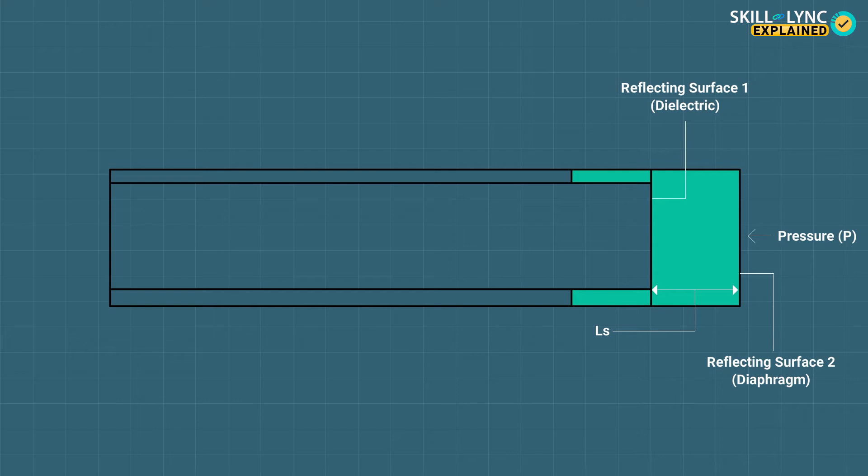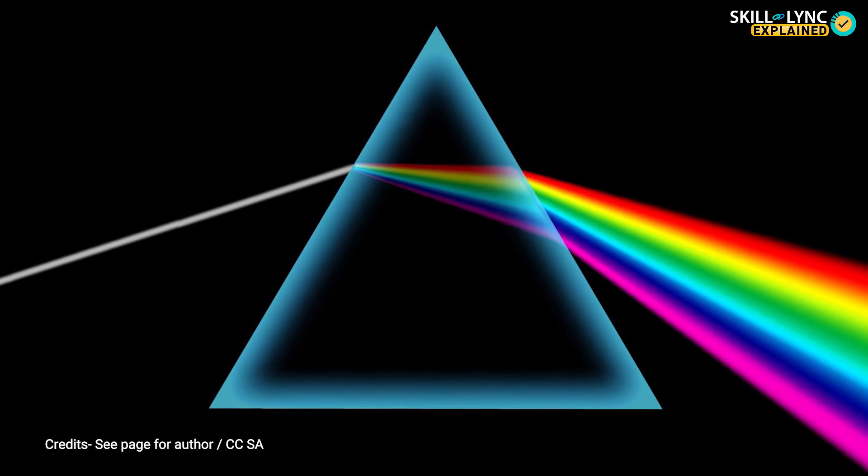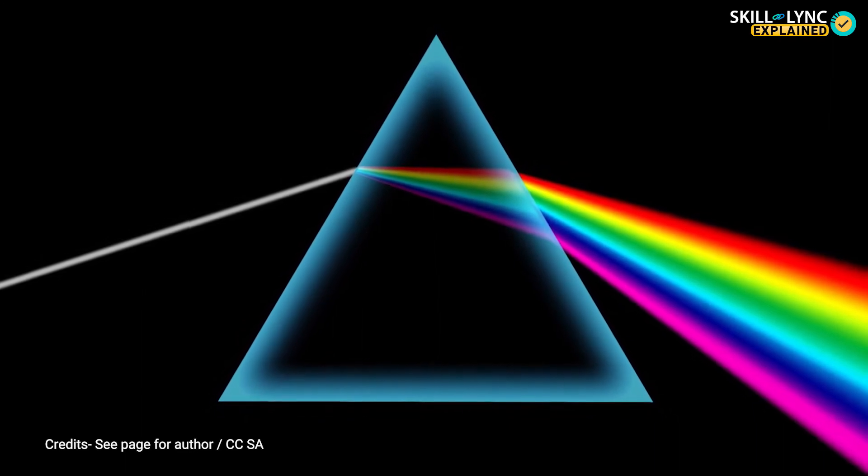Now white light is passed to measure the pressure. The question may arise, why specifically white light? We know that white light is a combination of several other colors having different wavelengths.